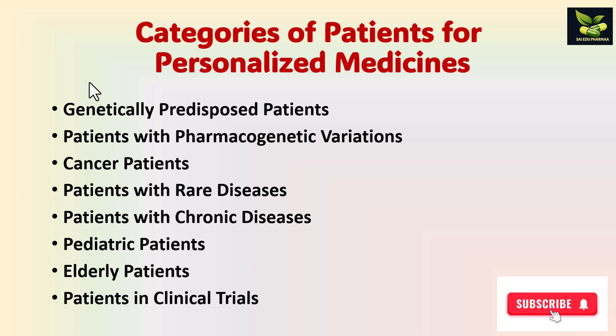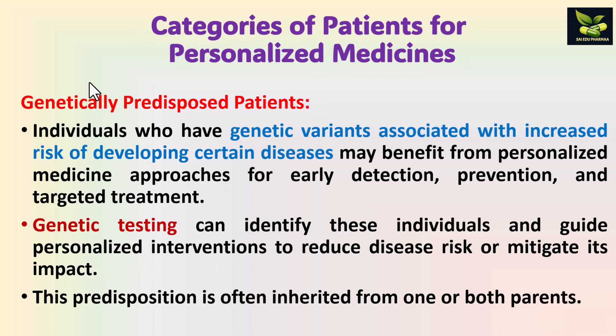The categories of patients we are going to discuss include: genetically predisposed patients, patients with pharmacogenetic variations, cancer or oncology patients, patients with rare diseases, patients with chronic diseases, pediatric patients or kids, elderly or geriatric patients, and patients in clinical trials.